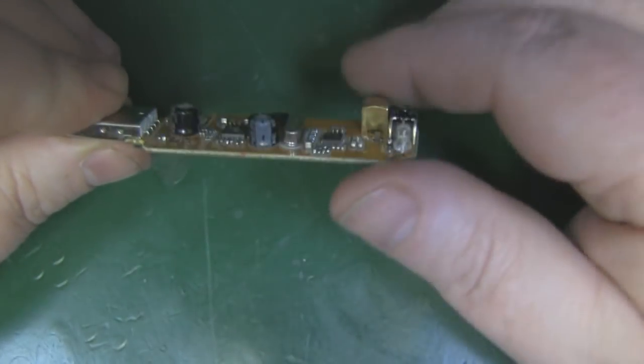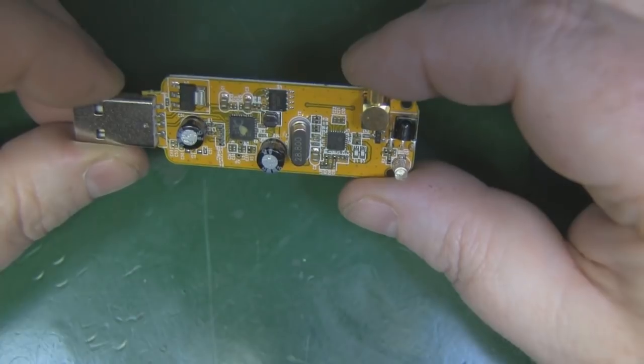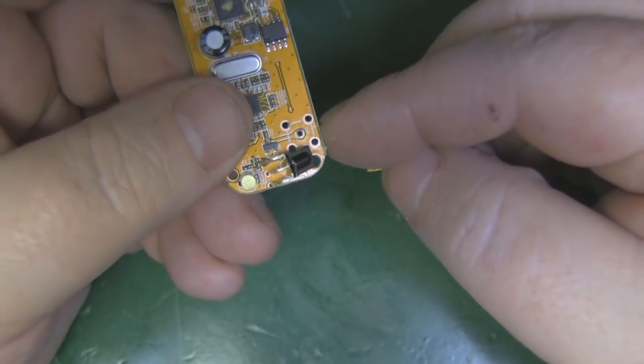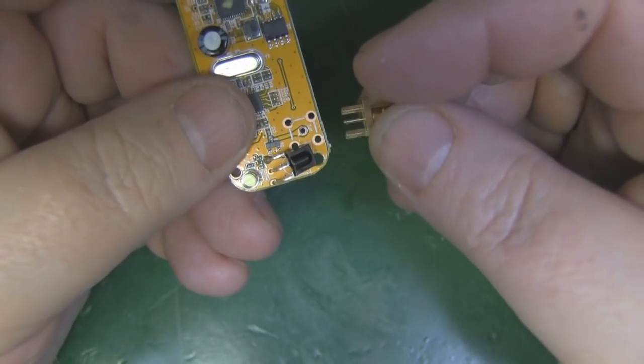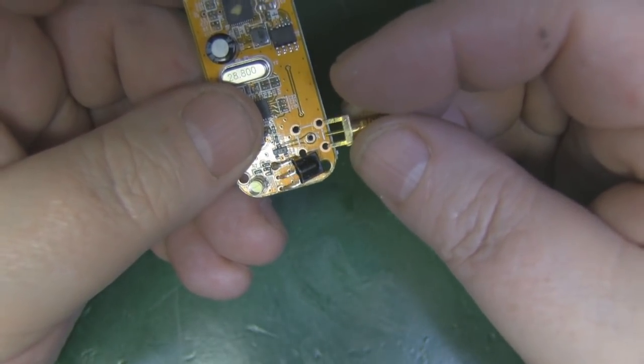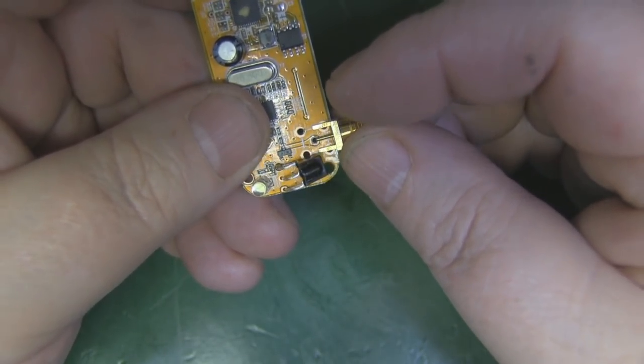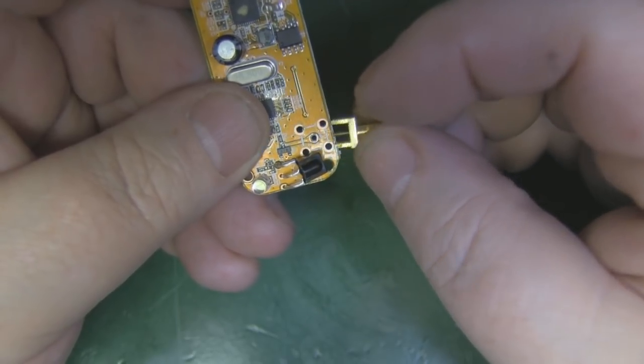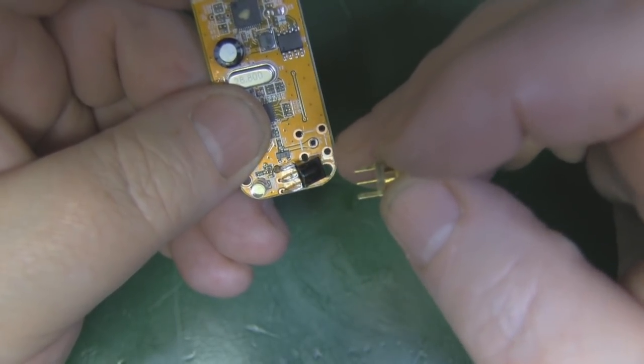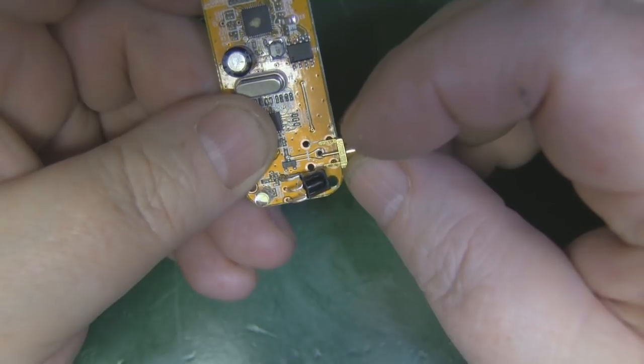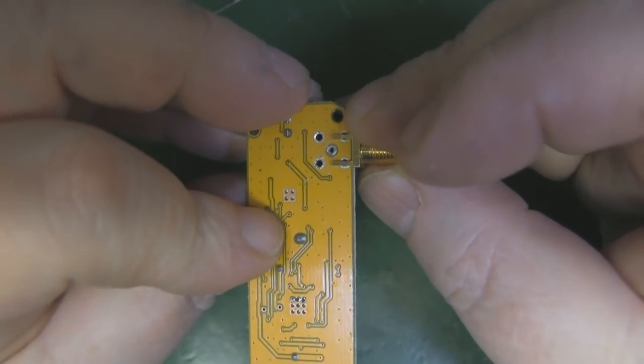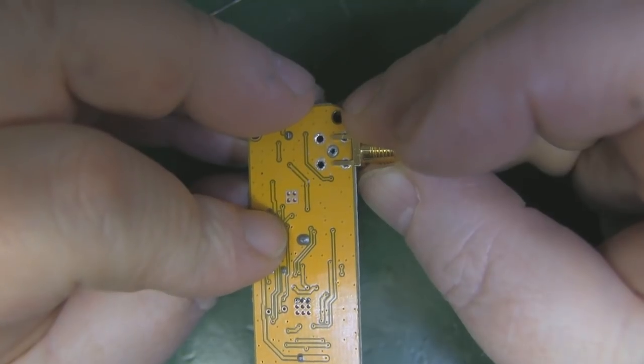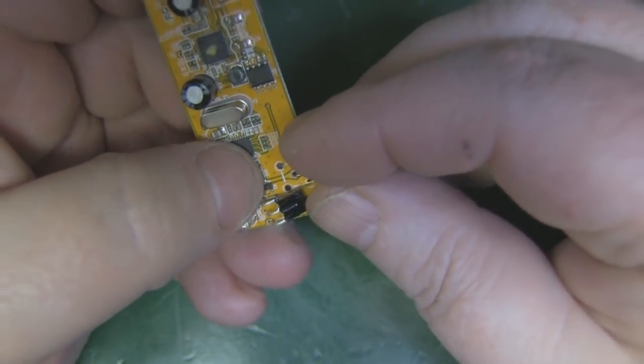I've got the MCX connector desoldered from the board there, and I think this little SMA, this PCB mount SMA, is going to work out just right. I can solder it on to those holes here for the ground plane for those two legs, and also solder it on the bottom just to fix it into position.